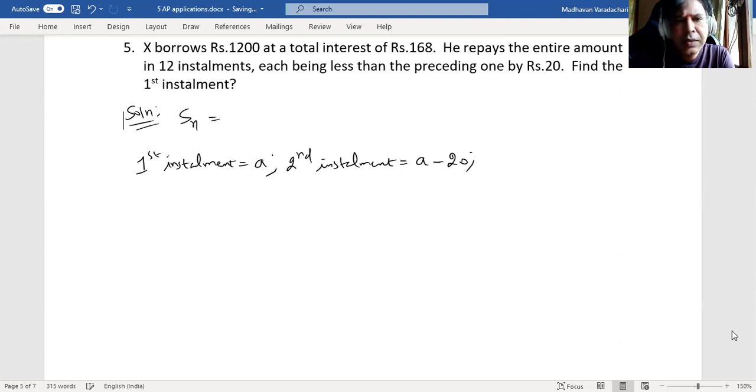So which means our d, common difference, will be (a - 20) minus a, which will give us minus 20. That will be our d. We have to find out what is a. So Sn is given in the question as 1200 plus interest 168, that means it is 1368.